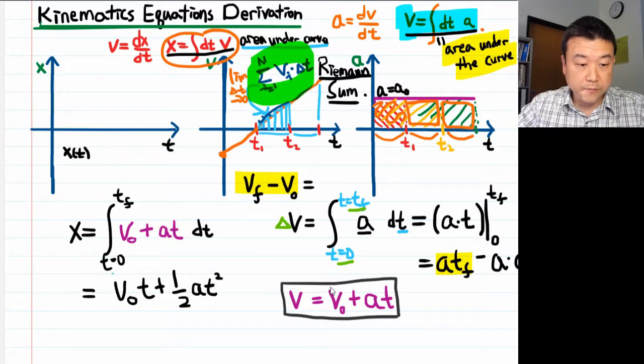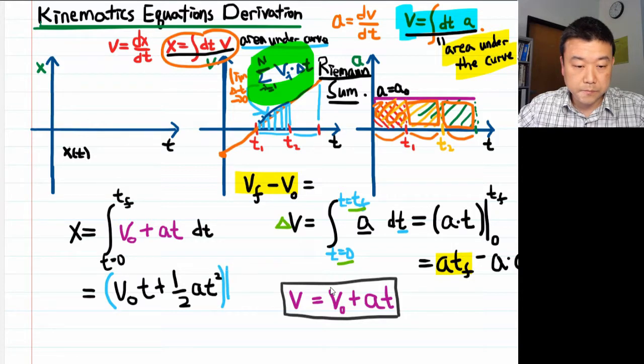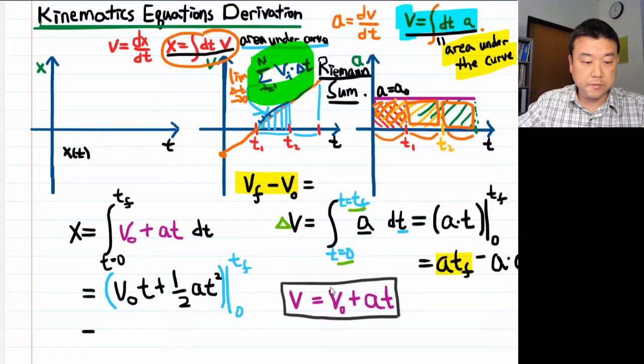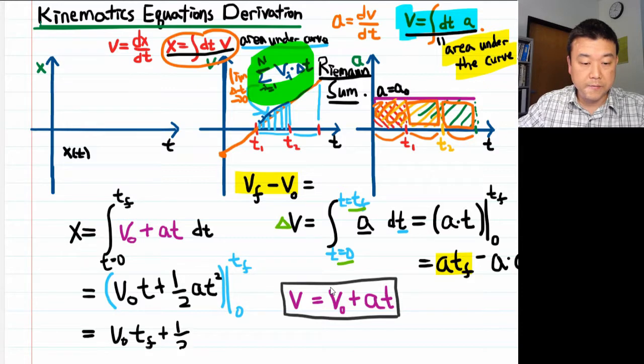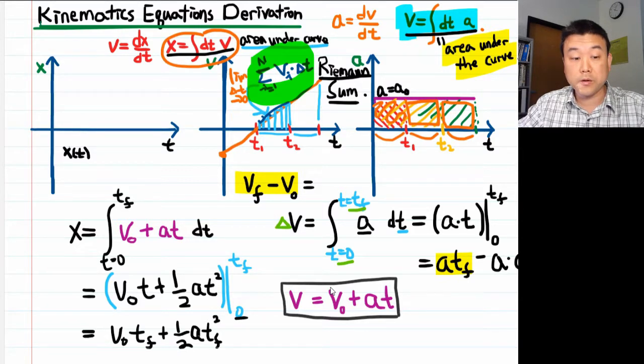Let's plug in the limits for the definite integral. So the time goes from zero to the final time t final, so that's equal to plugging in t final, v₀·t final plus one-half a·t final squared. And when I plug in zero I'm going to get zero for both terms, so nothing.